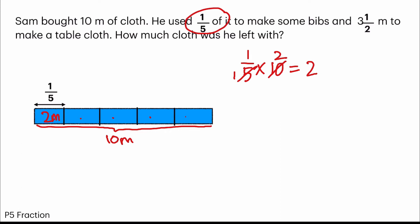Alternatively, I could say that five units equals to 10 meters and one unit would be 10 divided by 5 equals to 2 meters.